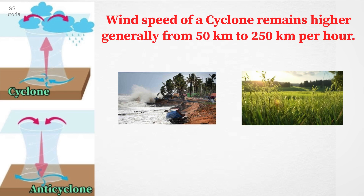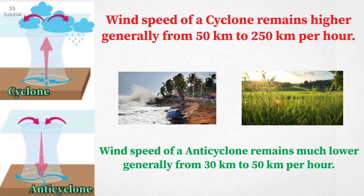In case of a cyclone, wind speed remains very high, usually from 50 km to 250 km per hour. In case of an anticyclone, wind speed remains much slower, usually from 30 km to 50 km per hour.